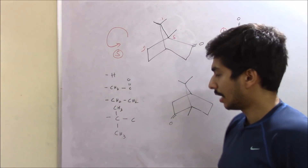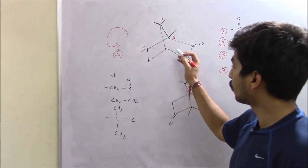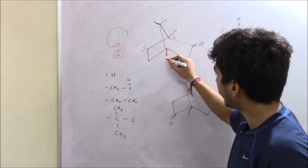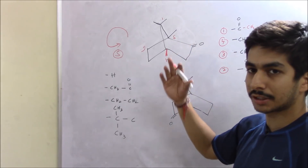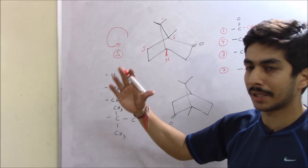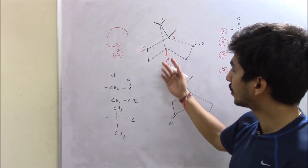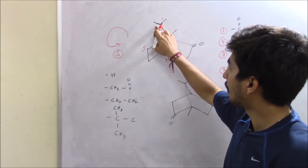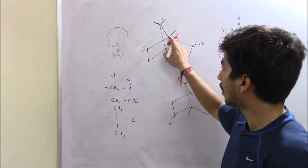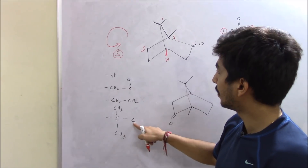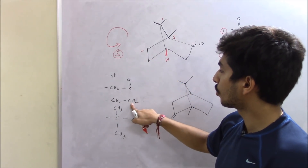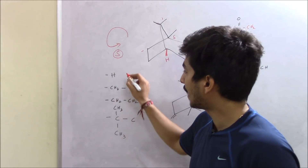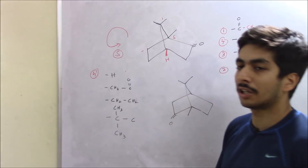Now let's find the configuration of the second chiral center. This carbon also has a hydrogen attached. Importantly, this hydrogen is coming out of the plane — it is coming towards you, out of the whiteboard — unlike the methyl group in the previous case which was going behind the plane. So the lowest priority group here is coming towards you.